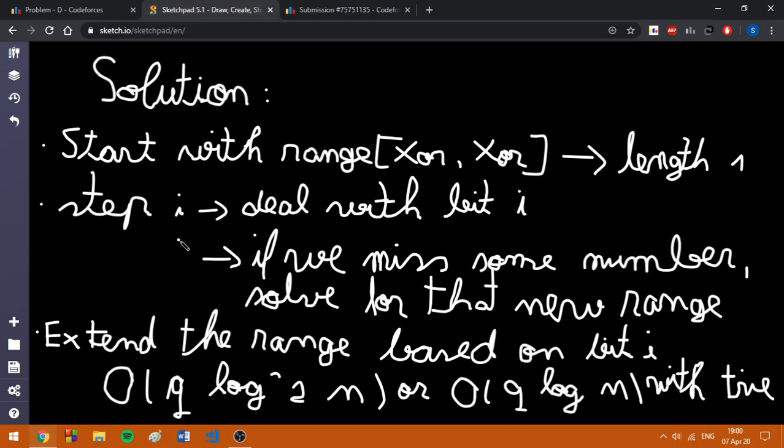We are going to solve the problem for that new range. Otherwise, we are just going to extend the range based on bit i and the initial XOR value. Like, if we have the bit on position i, we are going to extend it to the left. Otherwise, we are going to extend it to the right.